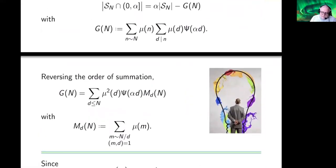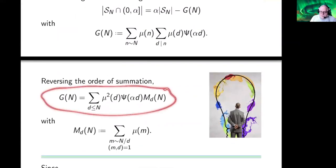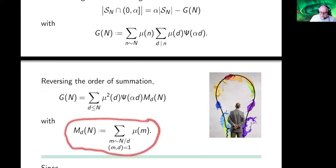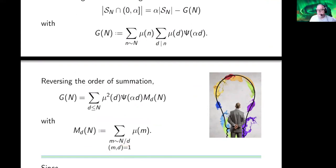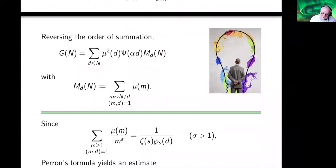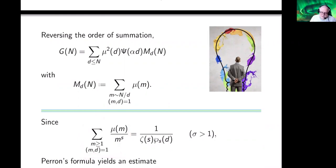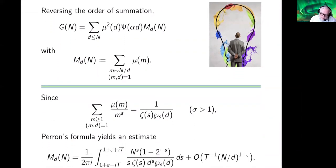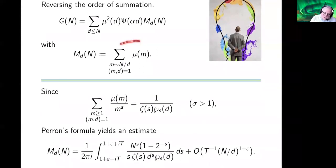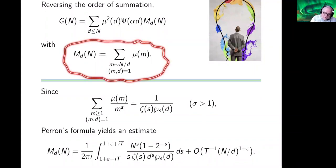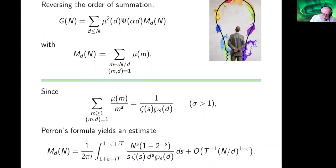If I sum over n in the dyadic interval satisfying the square-free condition, I now have a way to estimate the cardinality of the intersection of S_n with the interval 0 to alpha. I get the expected value plus an error term g(N) that looks like a certain sum. Reversing the order of summation, I can write g(N) this way, where M_d(N) is a sum over integers in the dyadic interval from N/d to 2N/d, but only those co-prime to d. This is where the function P_s starts popping out. Looking at the infinite series of mu(m) over m^s restricted to integers co-prime to d, this looks like 1 over zeta(s) times the correction factor P_s(d). Using Perron's formula, we can get an approximate value for M_d(N).